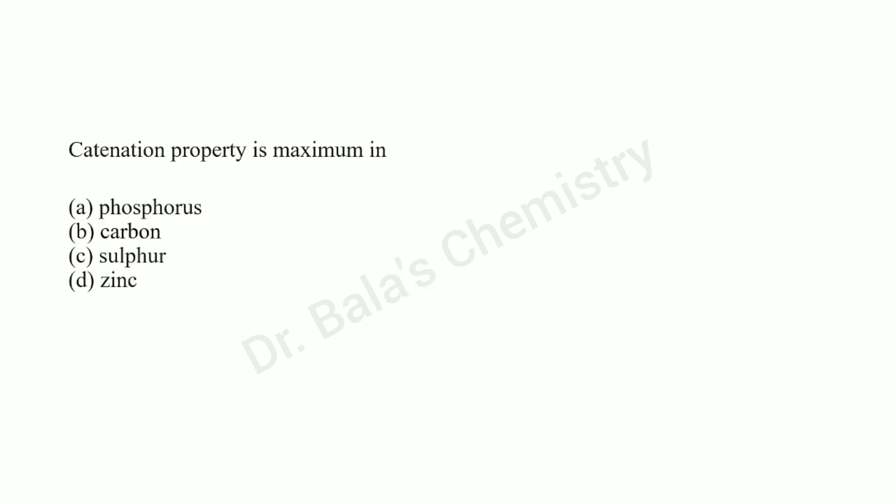Catanation properties are maximum in which element? Options are phosphorus, carbon, sulfur, and zinc. Obviously, the answer is carbon. Carbon has the highest catanation tendency.